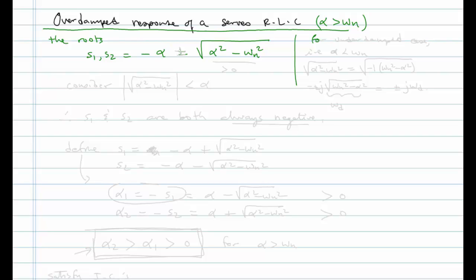Recall that for the underdamped case — in other words alpha less than omega_n — we wrote the square root of alpha squared minus omega_n squared as the square root of minus one times omega_n squared minus alpha squared, which equals plus or minus j times the square root of omega_n squared minus alpha squared, replacing that square root with the damped frequency: plus or minus j omega_d. Now in this case where alpha is greater than omega_n, we are not going to do that — we'll keep it in this form.